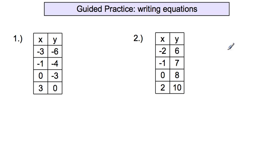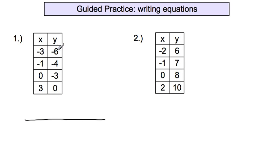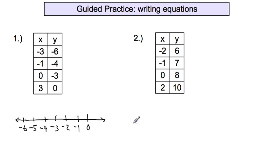Here is our guided practice. If you do not have a piece of graph paper out already, please get one out. We're going to be going over number 1 and number 2 on our guided practice and trying to figure out what the equation is. Starting again with what we did before, we see the x and the y. So let's put those on a real small number line — we've got to put negative 3 and negative 6 on the line. So that would be 0, negative 1, negative 2, negative 3, negative 4, negative 5, and negative 6.